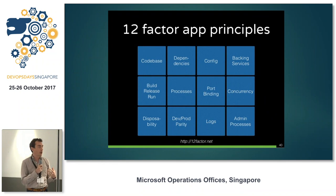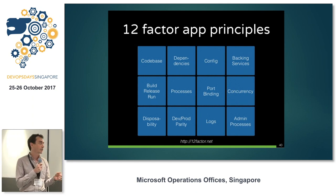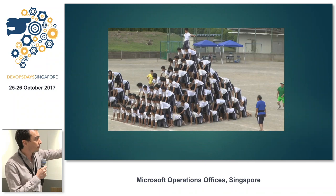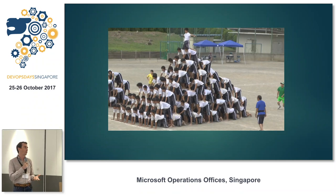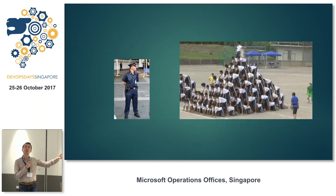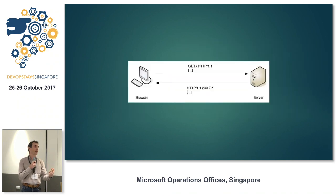I want to talk for a moment about 12-factor app stuff. All these principles are important, but I really want to drill into the dependencies piece. In 12-factor apps, your app is the kid on top of that pyramid. If you look at all of your dependencies, the code in your dependencies vastly outweighs the amount of code in your application most of the time.